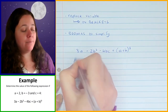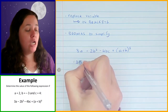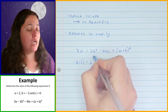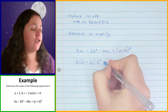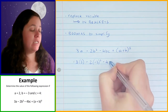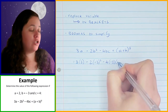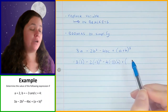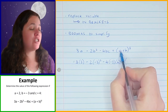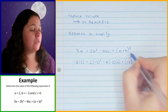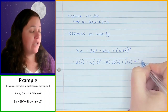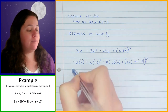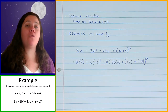So I've got 3 times a, which is 2 in brackets, minus 2 times b, which is negative 3 in brackets, squared, minus 4 times b which is negative 3 in brackets, times c which is 4 in brackets. Then plus, in brackets, I've got a which is 2 in brackets, plus b which is negative 3 in brackets, and that is cubed. Note that we have brackets inside brackets here — you could change these to square brackets to see the difference, but it's not necessary.